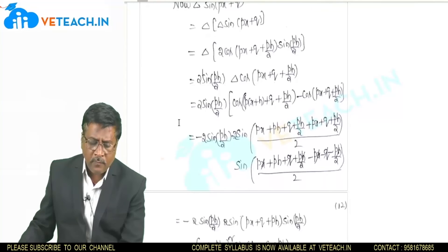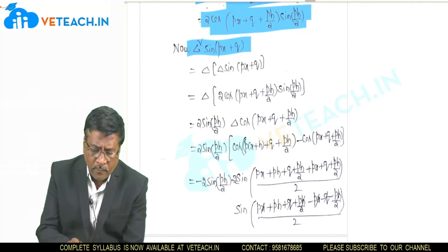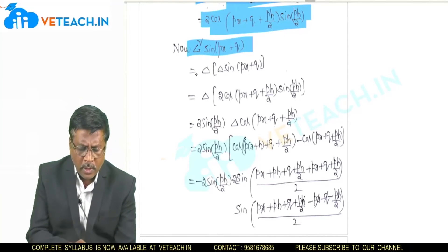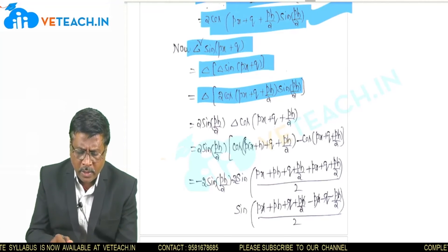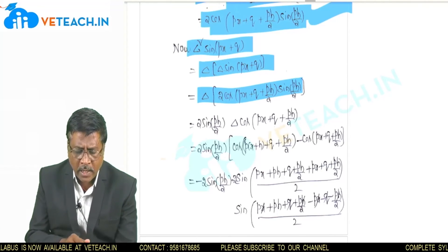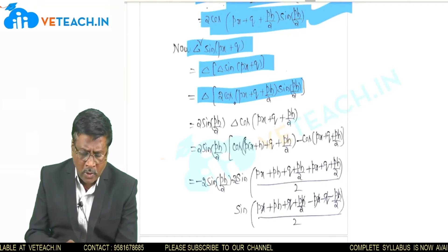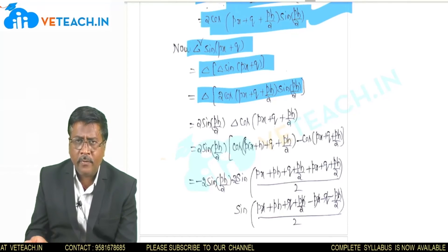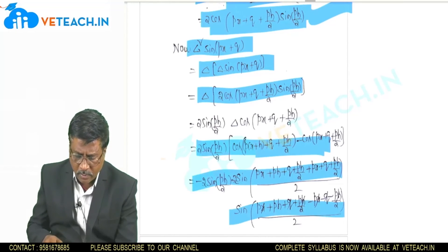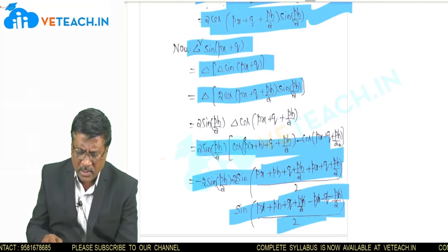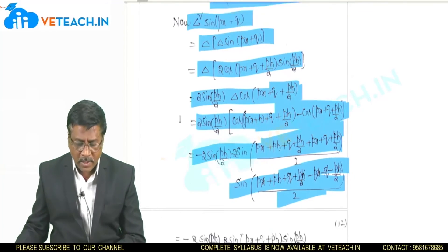For the second forward difference, delta squared of sin(px+q) = delta[delta(sin(px+q))] = delta[2·cos(px + q + ph/2)·sin(ph/2)]. Applying the next forward difference and simplifying gives the final result. These appear complicated but require only applying the concepts learned.